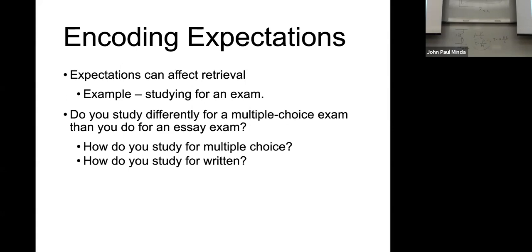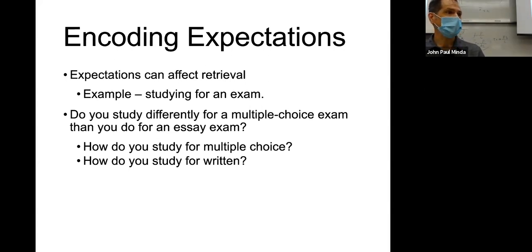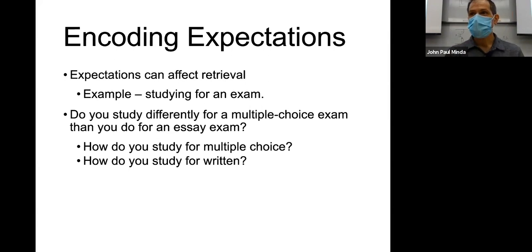That's close — you've got some of the information there. Within a memory task, a recognition task is one in which you say yes or no: I recognize that item as having been presented before. Recall is when you explicitly recall and list the things that are in your memory. It's a subtle difference and they overlap, of course. The processes used to recall information are similar to those used to recognize information.